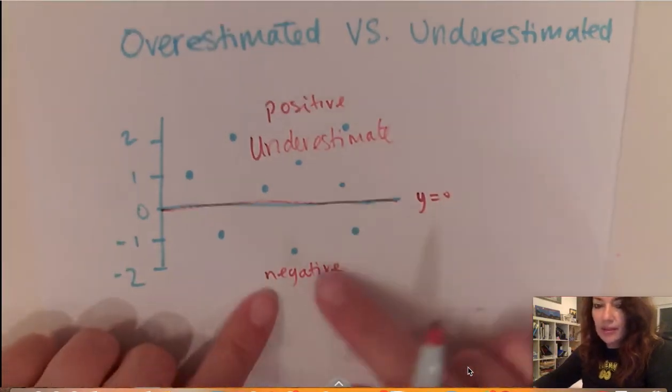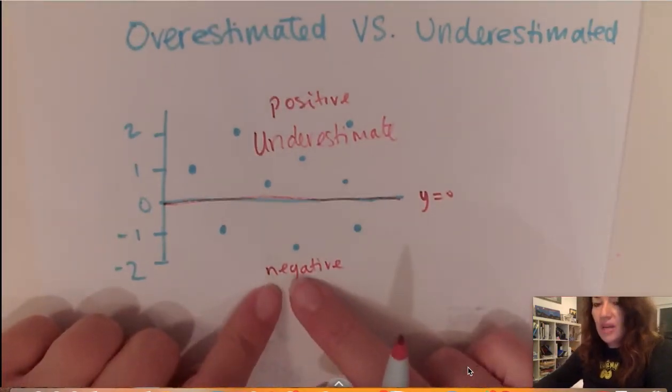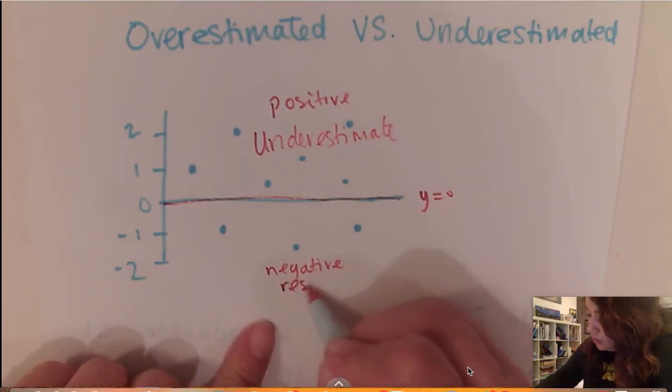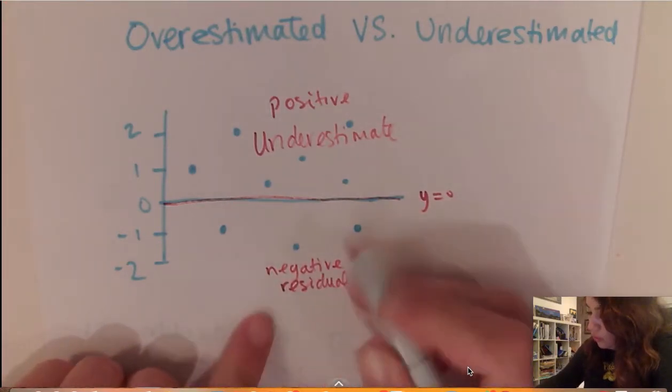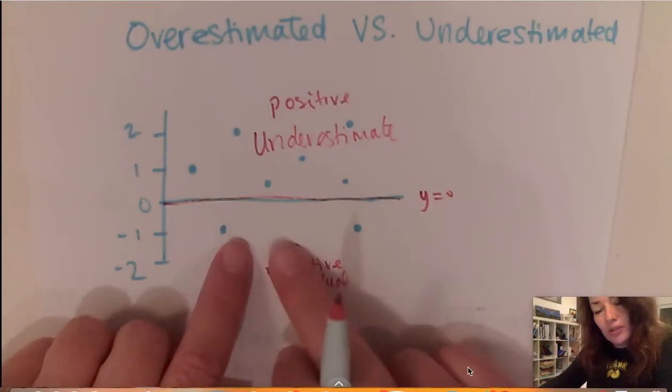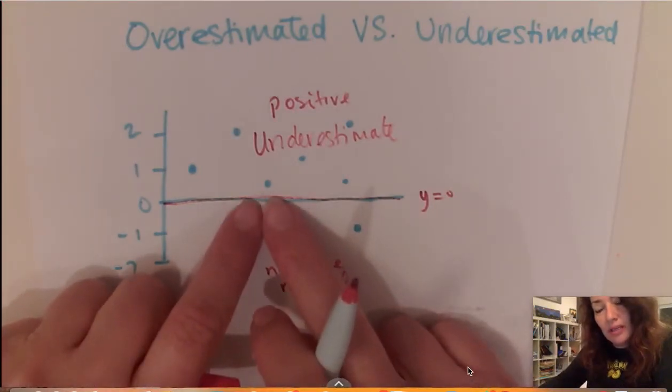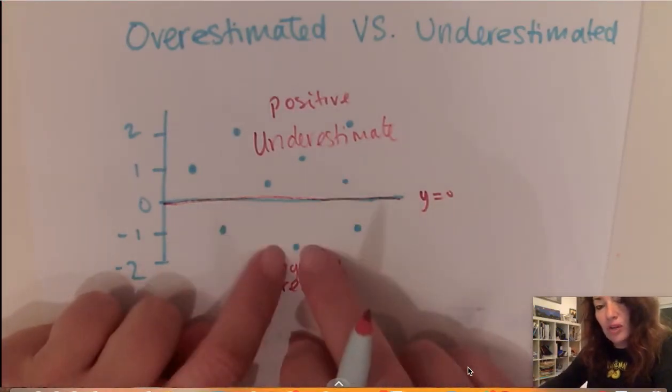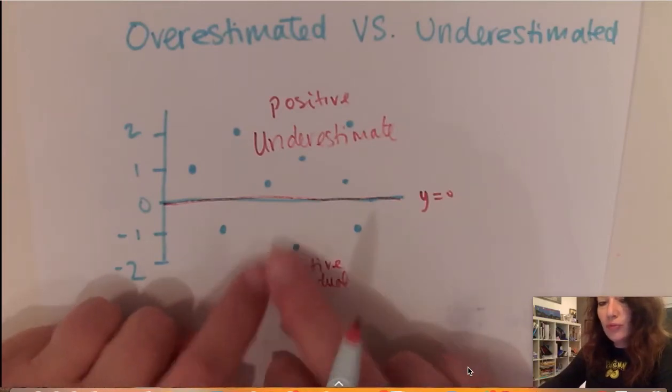And then likewise negative residual means so this is a residual. A negative residual means that our actual points are here and the predicted line is saying it is above these points. So this is an overestimate.